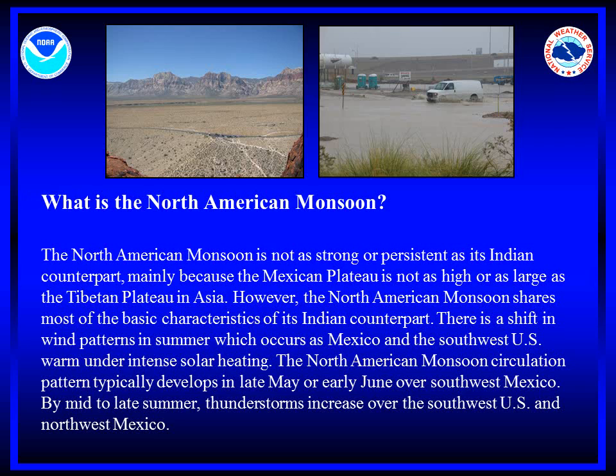Monsoon precipitation accounts for a substantial portion of annual precipitation in northwest Mexico and the southwest United States, with some areas receiving over half their annual precipitation from the monsoon.